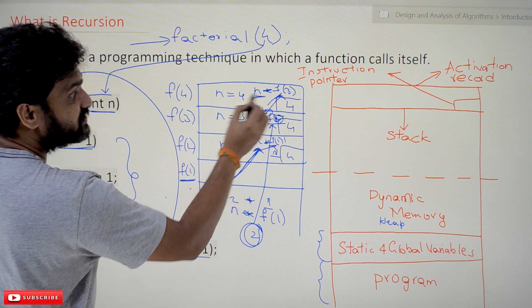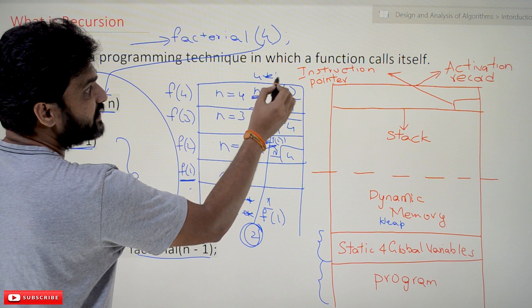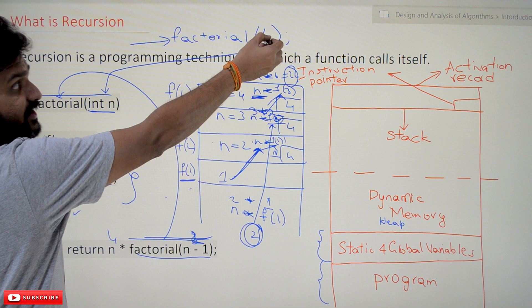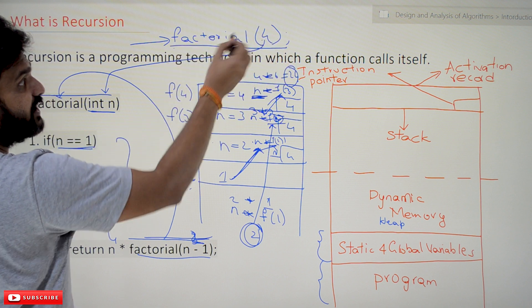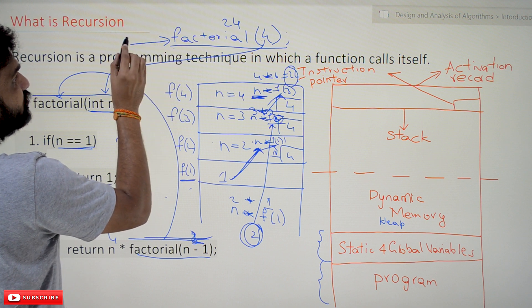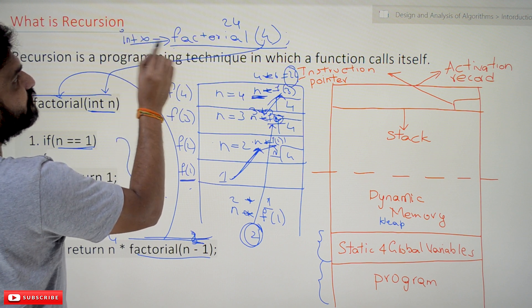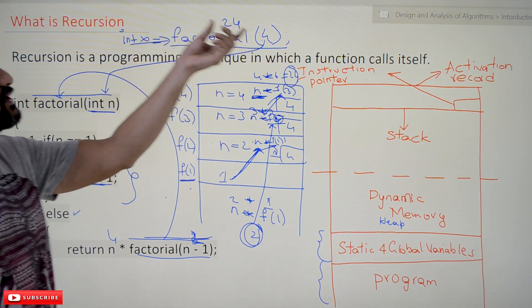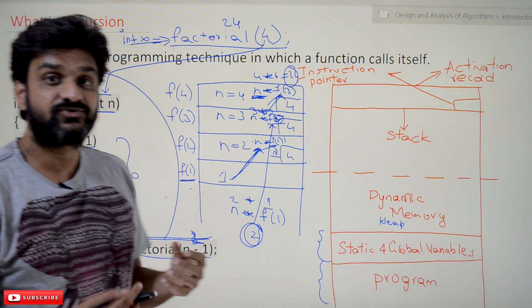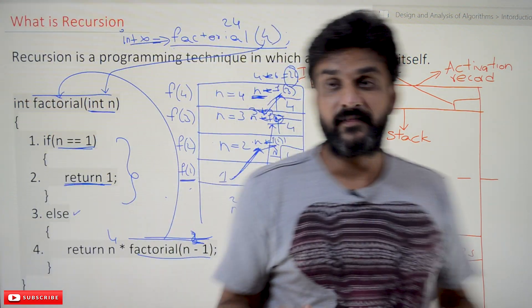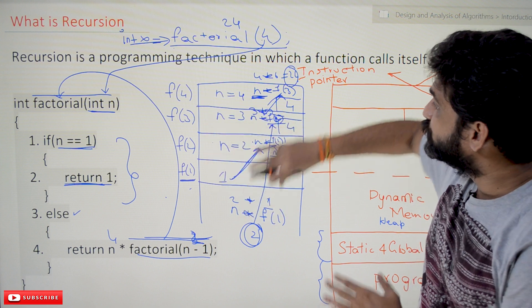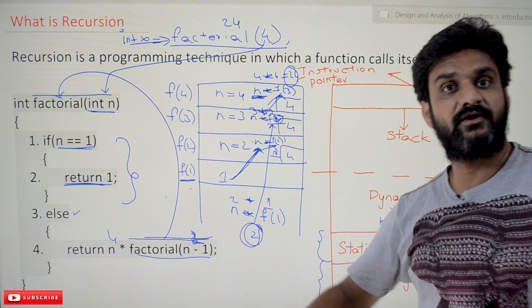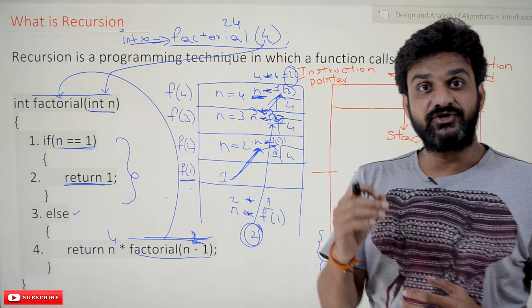So for this function call factorial(4), the value we get is 24. If you store this value — for example, x = factorial(4) — then x will be stored with 24. This function call was made in main, and the value propagates back and back until we get 24 at the end. That is how recursion works — you should understand that point clearly.